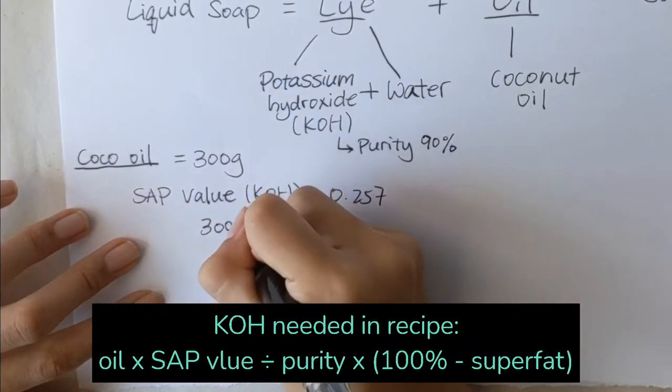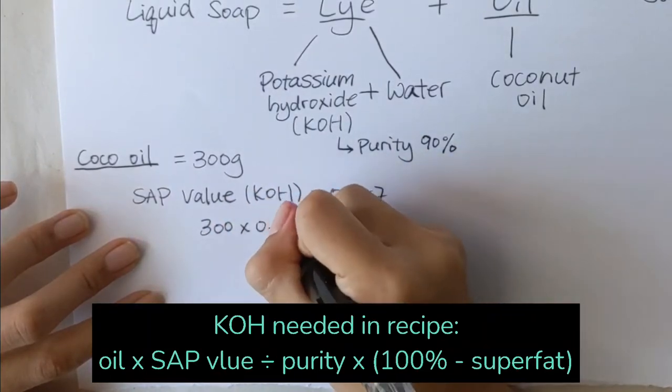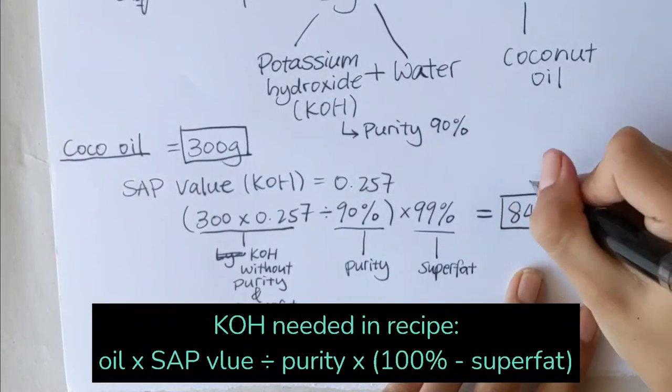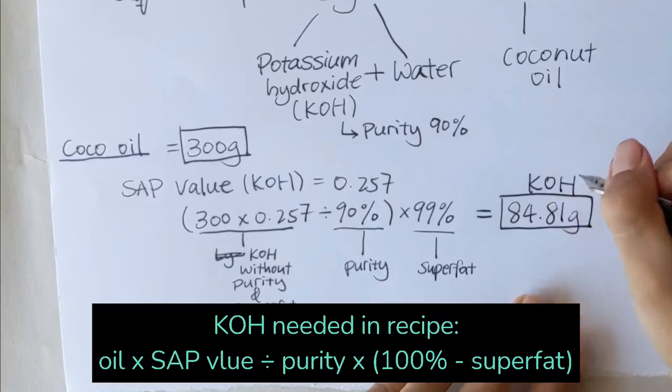First, take the amount of oils you're using, times it by its sap value, and then divide it by purity of lye, and times it by 100% minus superfat. And that gives us 84.81 grams.